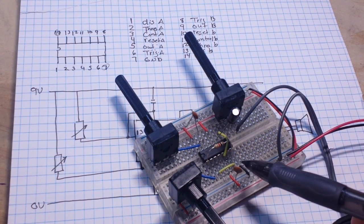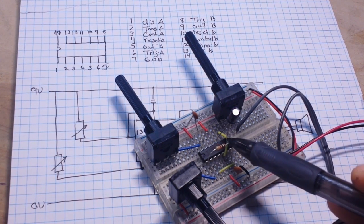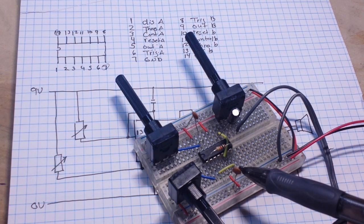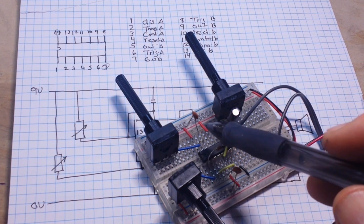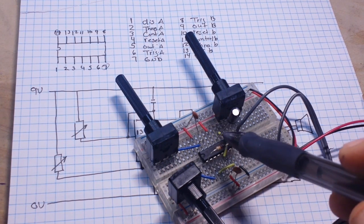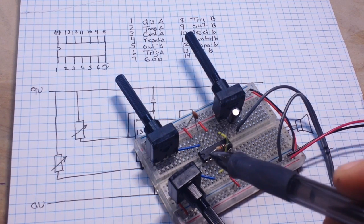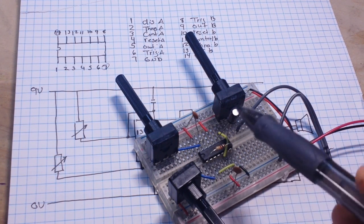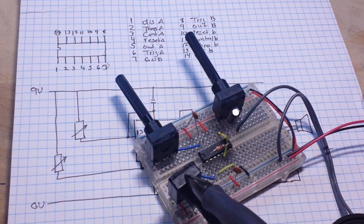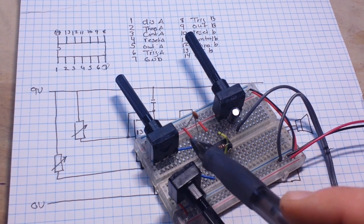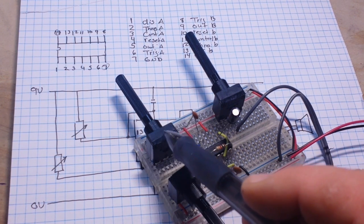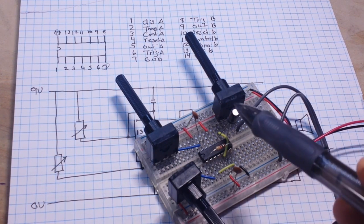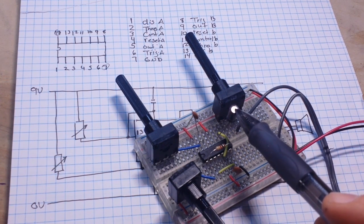Here we have our resistor and our capacitor that are controlling the frequency on output A. Also using this resistor, these two are in series, so that we can control the frequency up and down. And then over here, we have our pulse width.